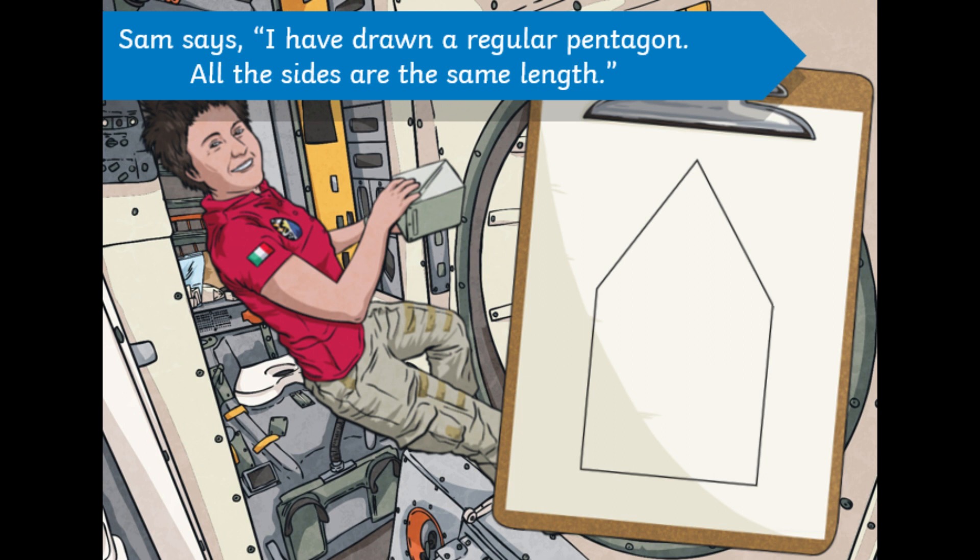So our reasoning is very important when it comes to our maths learning. So on this one, Sam says, I've drawn a regular pentagon. All the sides are the same length. Do we agree or disagree with Sam? Have a look at the diagram on her little clipboard there. Is that regular? Is it a pentagon? Can you write down for me now whether you think she's right or wrong and give a reason to back up why you think that? Yes, I agree because or no, I disagree because and it's what comes after the because that's really important.